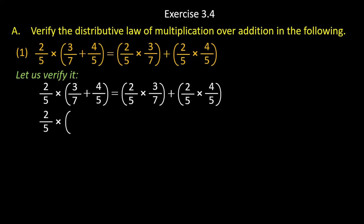First of all find LCM of 7 and 5, so LCM of 7 and 5 will be 35. Now divide 7 with 35, you will get 5, and 5 will be multiplied with 3. Then divide 5 with 35, you will get 7, and 7 will be multiplied with 4. Bracket close. On the other side, multiply numerators: 2 into 3 and 5, plus 2 into 4 and 5 into 5.